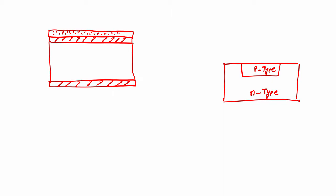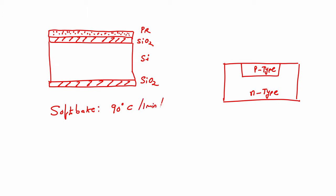The next step is we will pre-bake it — this is photoresist, this is SiO₂, this is silicon. We can grow silicon dioxide using LPCVD. Now we have spin-coated photoresist; after spin coating it is time for soft bake, and whenever we use silicon we have to clean it first.